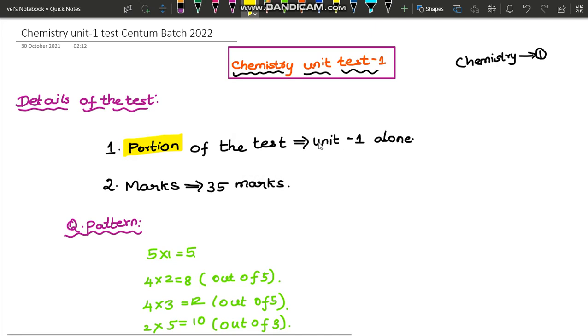Let's look at the details of the test. The portion of the test is just unit 1 alone. I have conducted a poll, and the majority voted for unit 1 alone. So our portion will be unit 1 alone and the marks will be 35 marks.